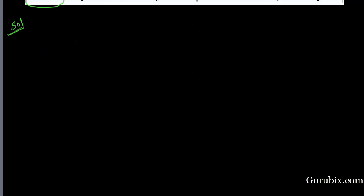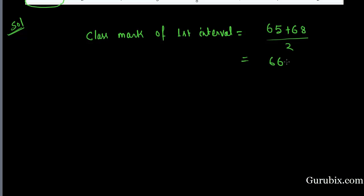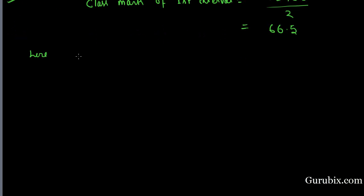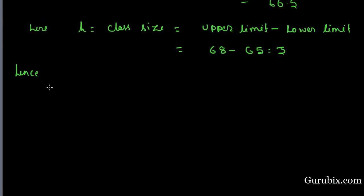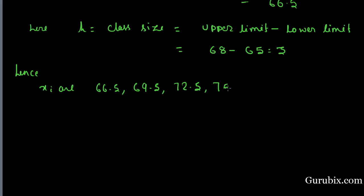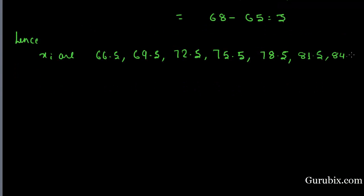Let's find the solution. First, we have to find the classmark. The classmark of the first class is 66.5. Here, the class size h is equal to upper limit minus lower limit, which is 68 minus 65, equal to 3. The remaining xi values are 66.5, 69.5, 72.5, 75.5, 78.5, 81.5, and 84.5.